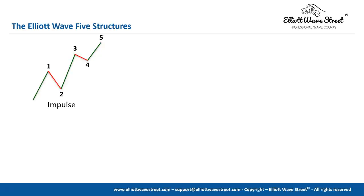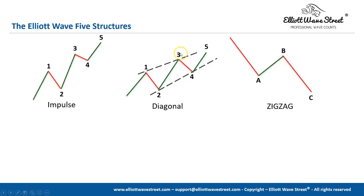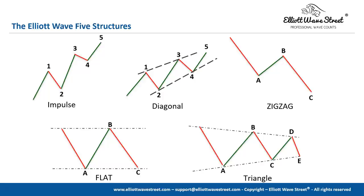There are five Elliott Wave structures you need to remember. The first one is the impulse. The second one is the diagonal wave — a diagonal wave is when we have price moving inside wave one without moving below the end of wave two; this usually happens at the beginning, like wave one, or at the end, like in wave five of the pattern. Then we have the zigzag. These two are the only ones in the direction of the trend. Then we have all the corrective waves: the zigzag, the flat when it's sideways, and the triangle. Those are the five basic Elliott Wave patterns you need to look for in your charts, and then you start connecting them like a big puzzle.